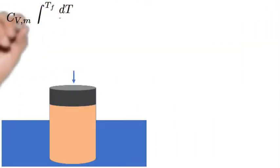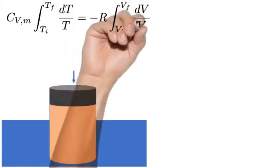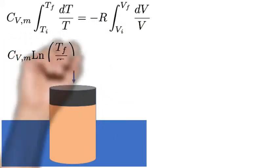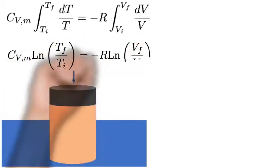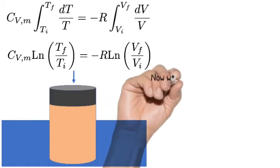Now on the left-hand side where we have to integrate from T initial to T final has to be equal to the right-hand side where we're integrating from V initial to V final. These integrals have a familiar form and we see that these give us logarithms of T final over T initial on the left-hand side and V final over V initial on the right-hand side.